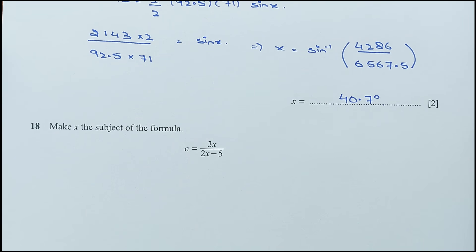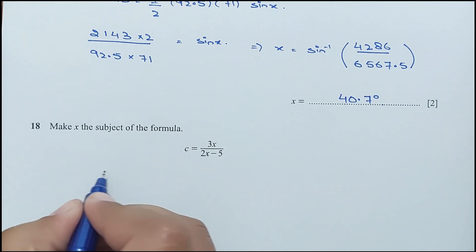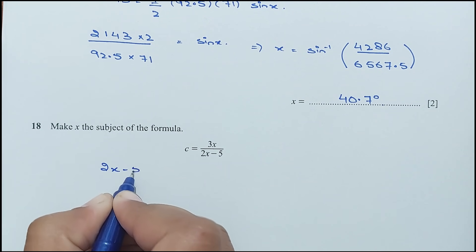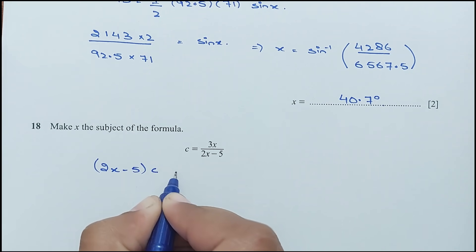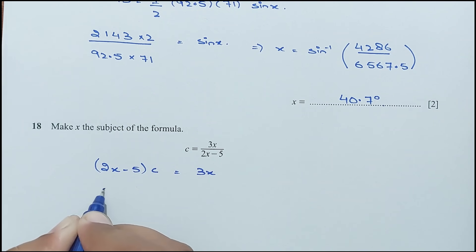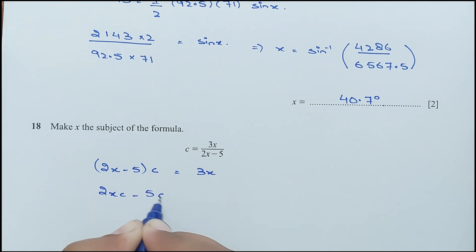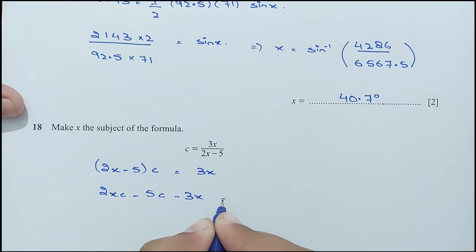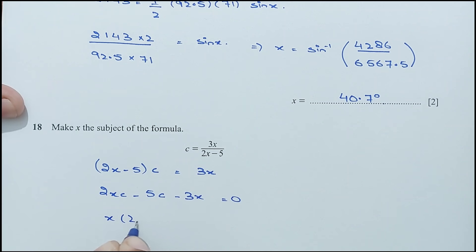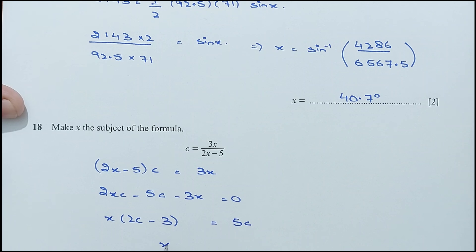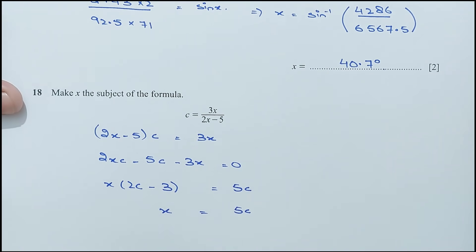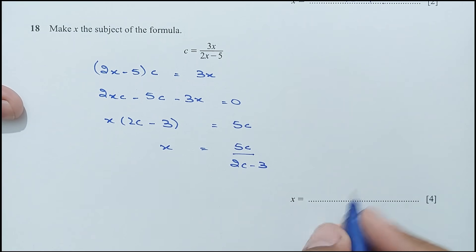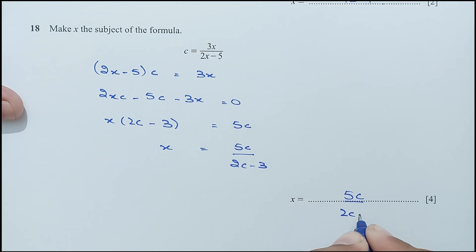Question number 18: make x the subject of the formula. Expanding: 2xc − 5c = 3x. Collecting x terms: 2xc − 3x = 5c, so x(2c − 3) = 5c. Therefore x = 5c/(2c − 3).